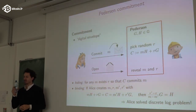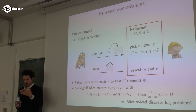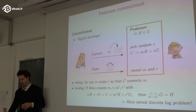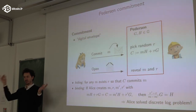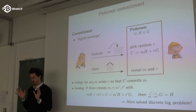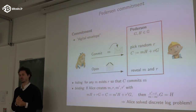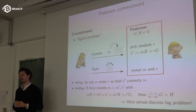You could also use a hash function for a commitment by hashing the message with randomness — if the hash function is collision-resistant, you can't open it in two ways. The reason we use this elliptic curve construction is that it has an additional property needed for confidential transactions: it's homomorphic.